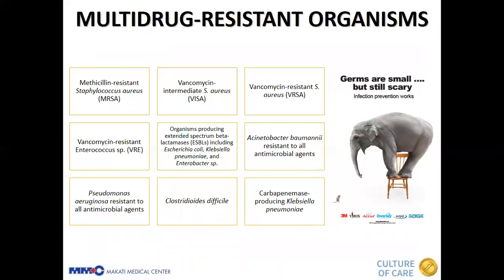Examples of multi-drug resistant organisms include: methicillin-resistant Staphylococcus aureus (MRSA), vancomycin-intermediate Staphylococcus aureus (VISA), vancomycin-resistant Staphylococcus aureus (VRSA), vancomycin-resistant Enterococcus species (VRE), organisms producing extended-spectrum beta-lactamases including E. coli, Klebsiella pneumoniae, and Enterobacter species, Acinetobacter baumannii resistant to all antimicrobial agents, Pseudomonas aeruginosa resistant to all antimicrobial agents, Clostridioides difficile (C. diff), and carbapenemase-producing Klebsiella pneumoniae.